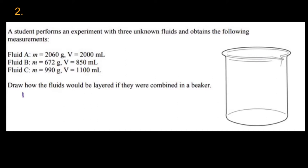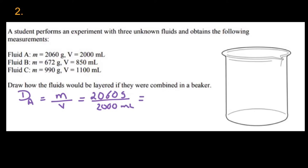Fluid A: D = M ÷ V = 2060 grams divided by 2000 milliliters, which gives nearly 1 gram per milliliter. Since these are liquids, we'll use milliliters as the unit.